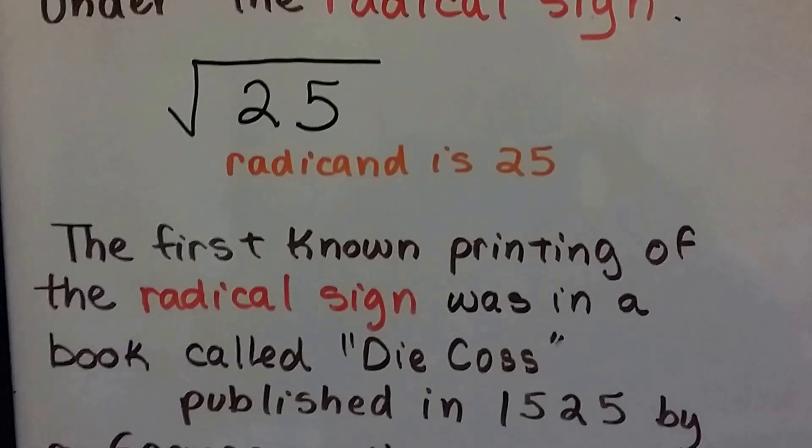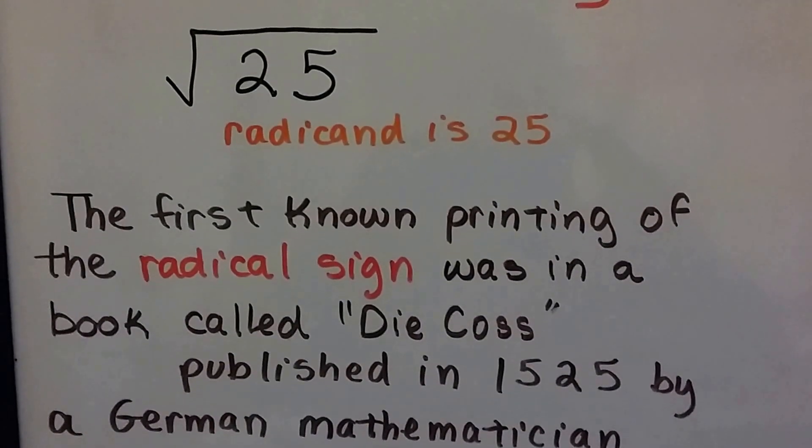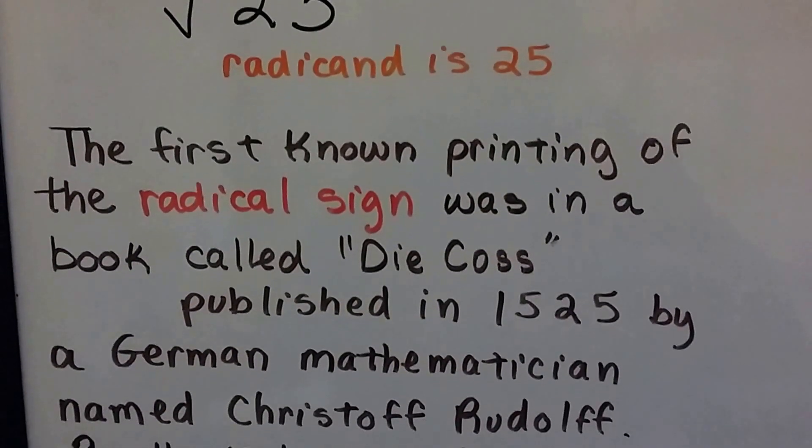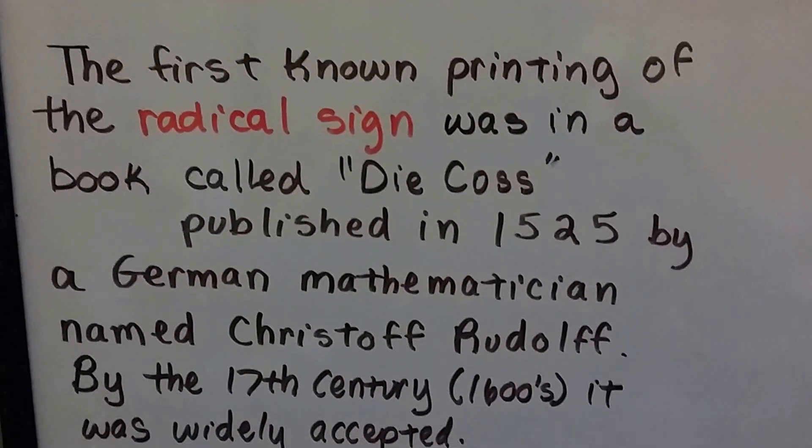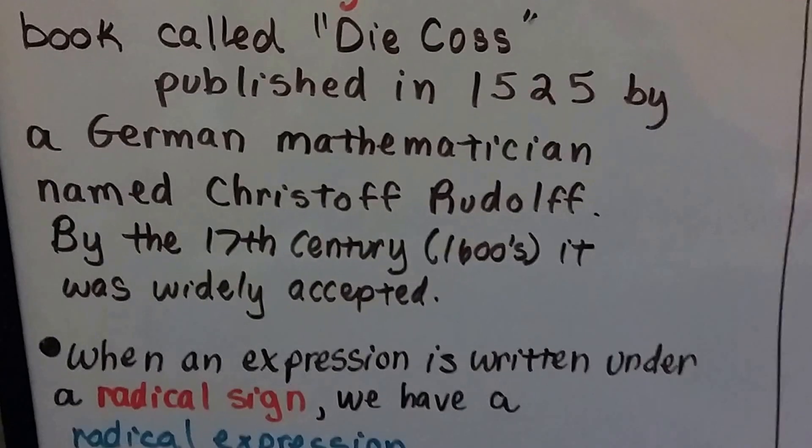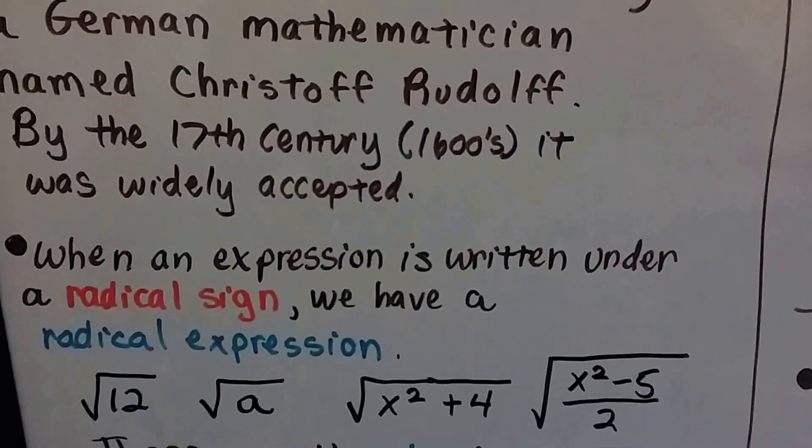You know, the first known printing of the radical sign was in a book called Die Koss. It was published in 1525 by a German mathematician named Christoph Rudolf. By the 17th century, the 1600s, it was widely accepted. A lot of mathematicians were using that square root symbol, that radical sign.